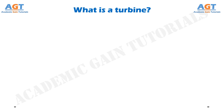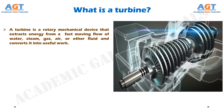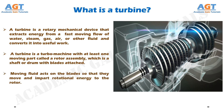Before we discuss the types of turbines, we need to know what turbines are. A turbine is a rotary mechanical device that extracts energy from a fast-moving flow of water, steam, gas, air, or other fluid and converts it into useful work. A turbine is a turbo machine with at least one moving part called a rotor assembly, which is a shaft or drum with blades attached. Moving fluid acts on the blades so that they move and impart rotational energy to the rotor.